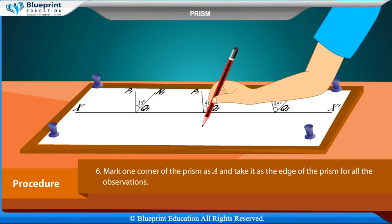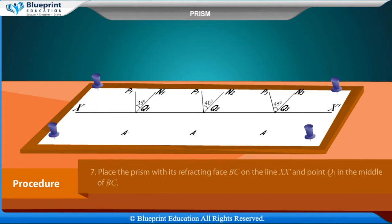Mark one corner of the prism as A and take it as the edge of the prism for all the observations. Place the prism with its refractive face BC on the line x, x dash and point q1 in the middle of BC.